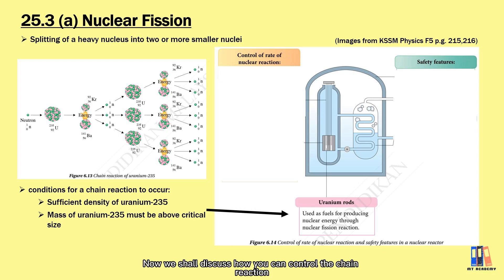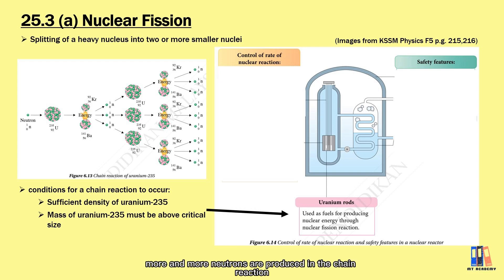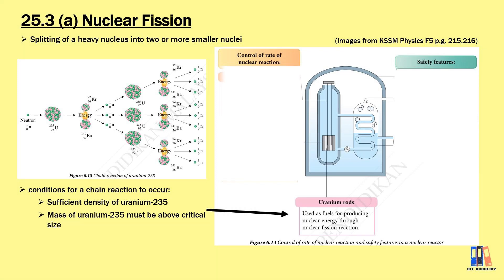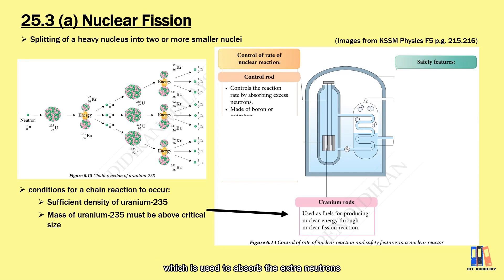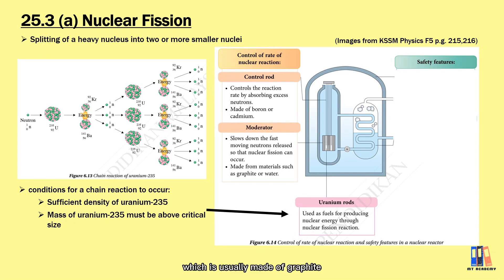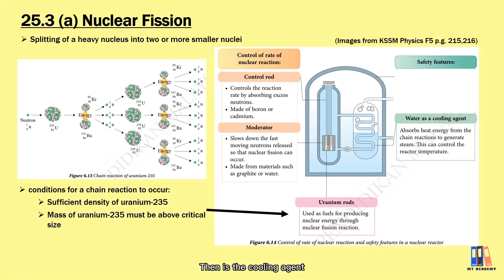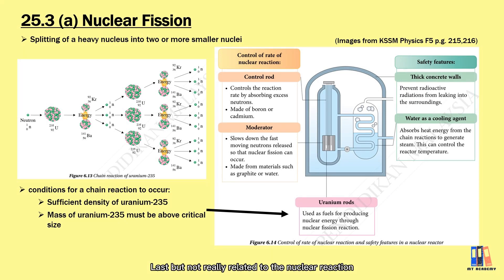Now we discuss how to control the chain reaction inside a nuclear reactor, since more and more neutrons are produced. If uncontrolled, a nuclear explosion could occur. Safety features include: the control rod, which absorbs extra neutrons; the moderator, usually made of graphite or water, which slows down the neutrons; a cooling agent to absorb heat energy from the reaction; and a thick concrete wall to prevent any leakage from the reactor.